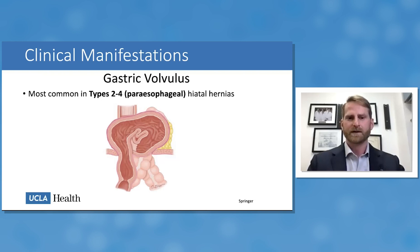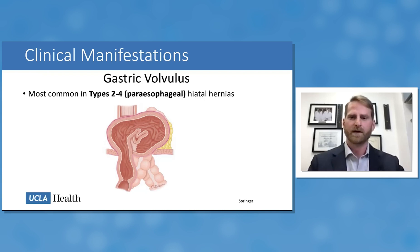Gastric volvulus rarely occurs in sliding type one hiatal hernias, but is common in types two through four paraesophageal hernias. This image of a type four paraesophageal hernia illustrates how the GEJ is to some extent pinned down by the diaphragm and the stomach flips up above it into the space created by the hernia.